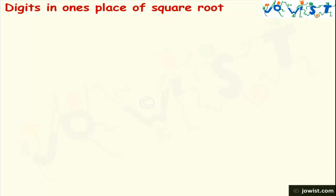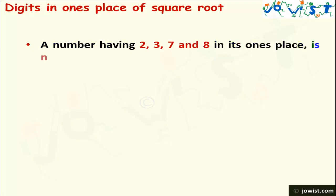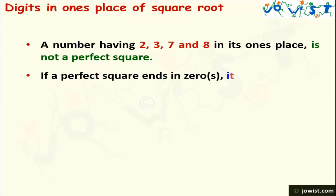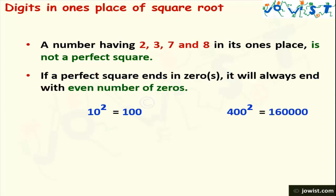One more thing to make your calculation easier: a number having 2, 3, 7, or 8 in its 1's place is not a perfect square. Also, if a perfect square ends in 0, it will always end with an even number of zeros. For example, the square of 10 is 100 — which has 2 zeros (even). The square of 400 is 160,000 — which has 4 zeros, again an even number. These small things will help you calculate faster.